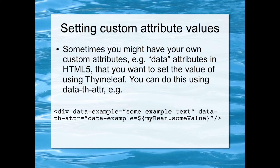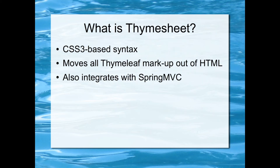What you're doing is you're saying what the name of the attribute is — in that case, data-example — and then just setting it to some value from the Java. And to extend this even more, Adam Perry at Connect Group, who is the chief technical architect, came up with an extension called Timesheet. What that does is it uses CSS3 selectors, so you don't even have to add all those data attributes to the HTML to get it to work. Instead, you just write a separate CSS3 file with the extension .tss and do all your mapping in that instead.